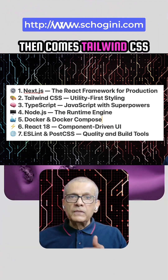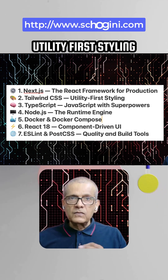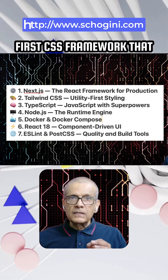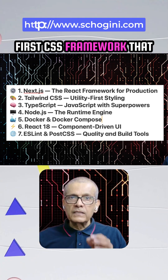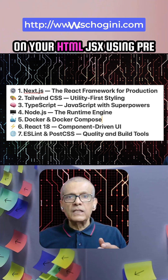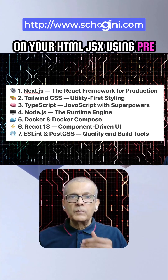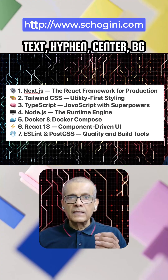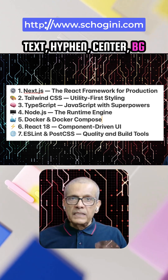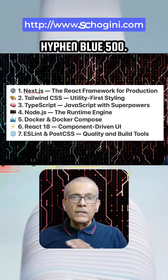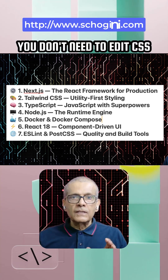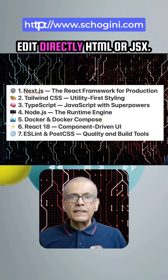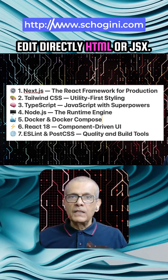Then comes Tailwind CSS — utility-first styling. Tailwind CSS is a utility-first CSS framework that lets you design directly on your HTML or JSX using pre-built classes like P-4, Text-Center, and BG-Blue-500. You don't need to edit or even see the CSS files — edit directly in HTML or JSX.